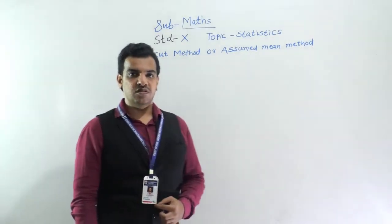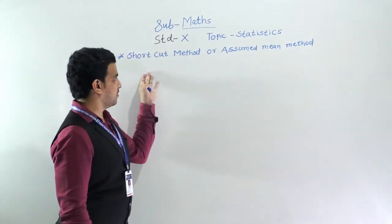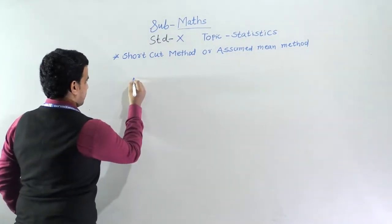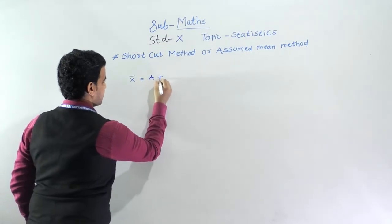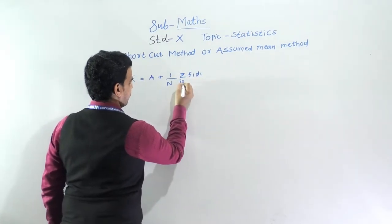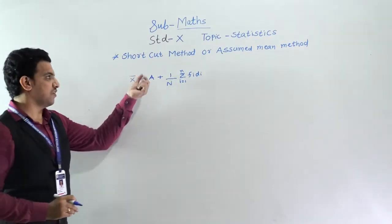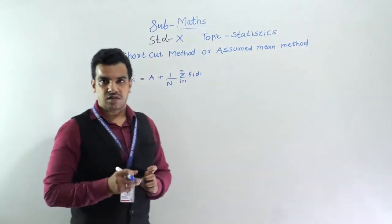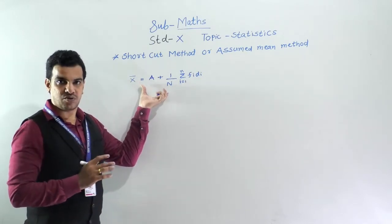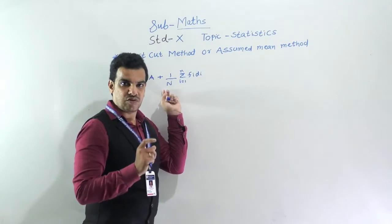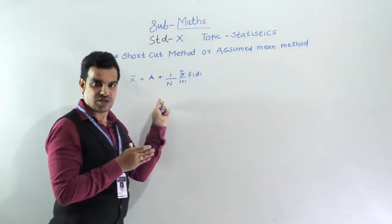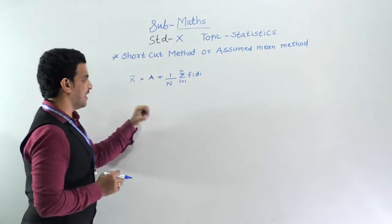Hello students. Today we are going to learn how to find mean by shortcut method, or we can say it is the assumed mean method. I will write the formula directly here. We use this method when observations xi or frequencies are very large, so we cannot use the direct method because in the direct method we have to find fi·xi, which becomes very tedious and complex.